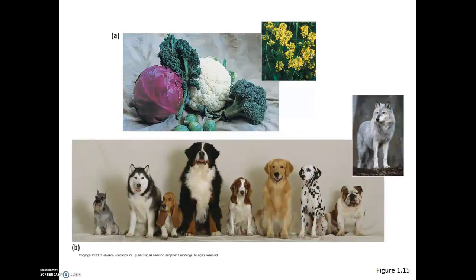One example would be most of the produce we see in grocery stores: red cabbage, kale, cauliflower, broccoli, and Brussels sprouts are actually all individuals of the same species — Brassica oleracea. We can definitely see differences between these types of produce, but they all came from the same origin, the same starting plant, and it was through human selective breeding that we got these different varieties of vegetables.